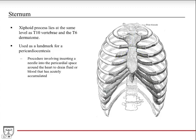The xiphoid process is the most inferior portion of the sternum, at the same level as the T10 vertebra. If you can palpate it in an individual, it's a landmark for the T6 dermatome. Clinically, it's used as a landmark for pericardiocentesis, a procedure typically done by cardiothoracic surgeons. They palpate the xiphoid process, go just lateral to it, and then underneath the costal margin — the border formed by all these lower ribs fusing together.